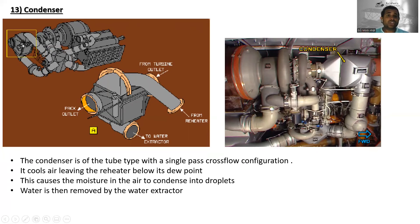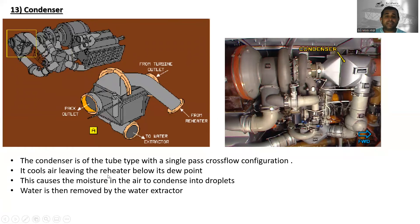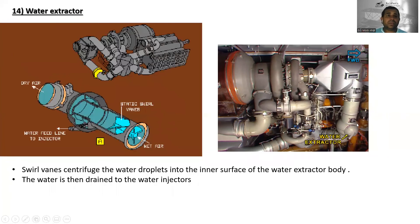The condenser — you can see the pack outlet, turbine outlet inlet, connection from the reheater, and outlet to the water extractor. The condenser is of the tube type with a single pass cross-flow configuration. It cools air leaving the reheater below its dew point, causing moisture in the air to condense into droplets, which are then removed by the water extractor.